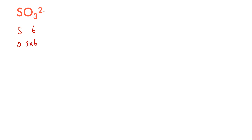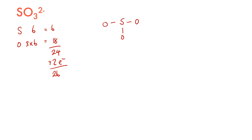For SO₃²⁻, we have the valence electrons of sulfur, which is 6. For oxygen, we have 3 times 6, which gives us 18, for a total of 24, plus 2 from the negative charge gives us 26 valence electrons. Since sulfur is lower on the periodic table than oxygen, sulfur will be our central atom. We draw sulfur with 3 single bonds to oxygen, using 6 electrons, leaving 20 remaining.